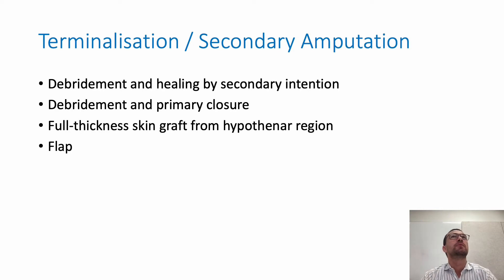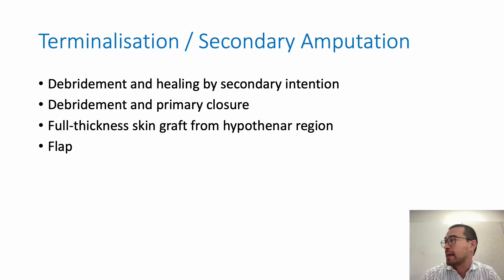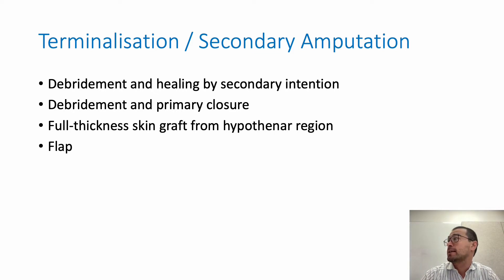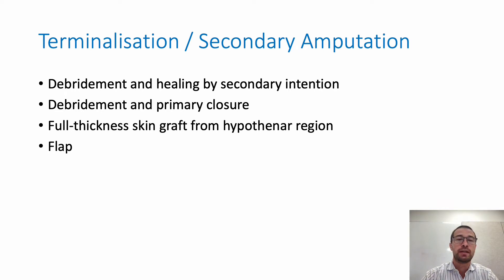Just briefly on terminalisation or secondary amputation — there are various ways that we can get the stump to heal over. It can be done by debridement and letting things granulate up, healing by secondary intention alone. Occasionally you can consider shortening the bone and getting primary closure of the skin. Full-thickness skin graft from the hypothenar region is an option, as are local flaps or even more distant flaps with pedicles.